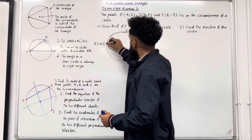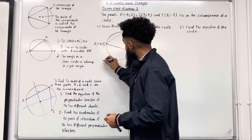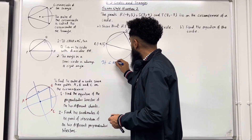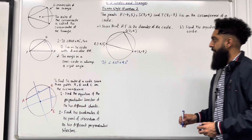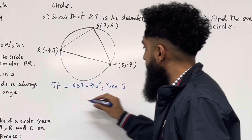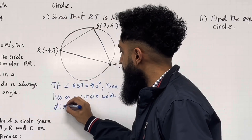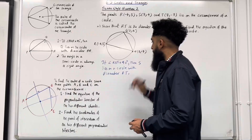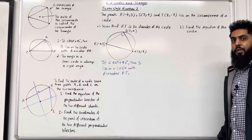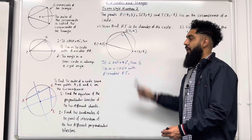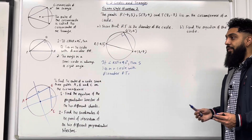Let's form a triangle. We know that if angle RST is equal to 90 degrees, then the point S lies on a circle with diameter RT. In other words, we want to show that triangle RST is a right-angled triangle. To do this, we need to show that this triangle satisfies the Pythagorean theorem: a² + b² = c². The Pythagorean theorem is only valid for right-angled triangles.